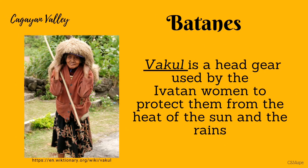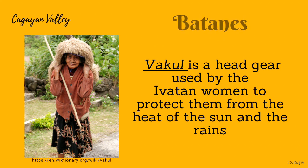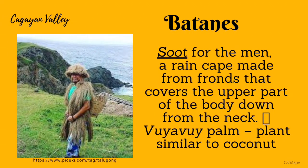Vakul is a headgear used by the Ivatan women to protect them from the heat of the sun and from the rain. On the other hand, men wear soot, a rain cape made from fronds that covers the upper part of the body down from the neck. This special clothing is made up of woven fibers of the boyabuy palm, a plant similar to coconut.